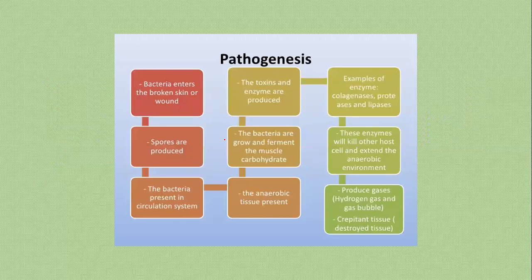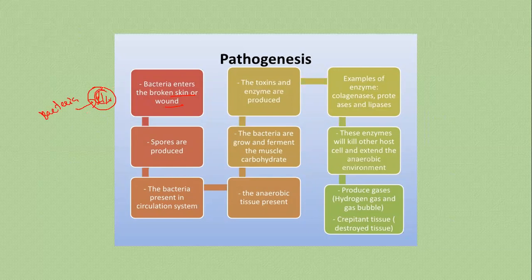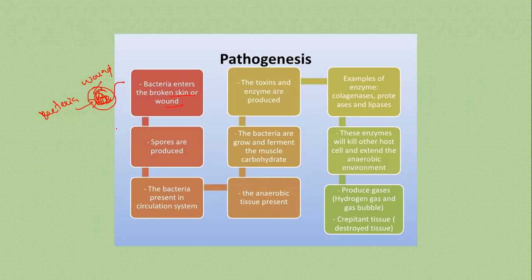Here is the pathogenesis of gas gangrene. First, the bacteria enter the broken skin or wound. The bacteria are carried into the circulation system and spores are produced. Once bacteria are present in the circulation system, anaerobic tissue conditions develop. The bacteria grow and ferment muscle carbohydrates. Toxins and enzymes are then produced as a result.